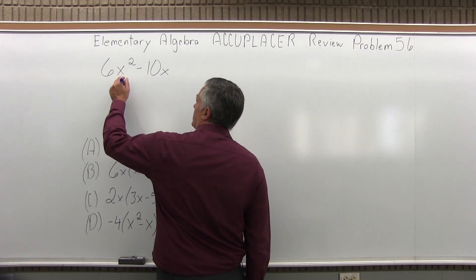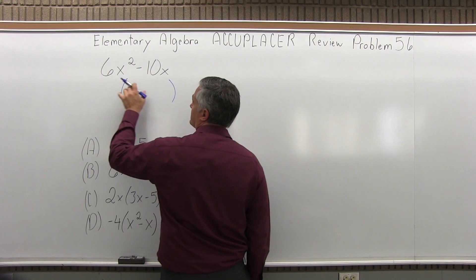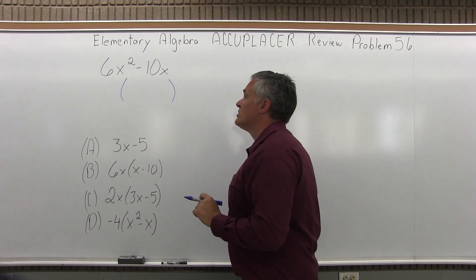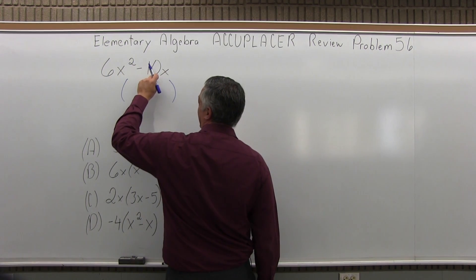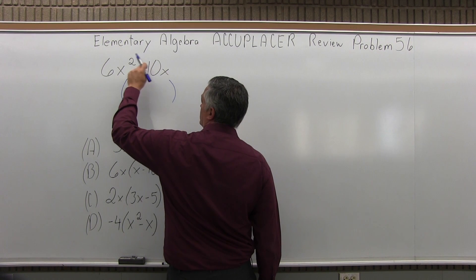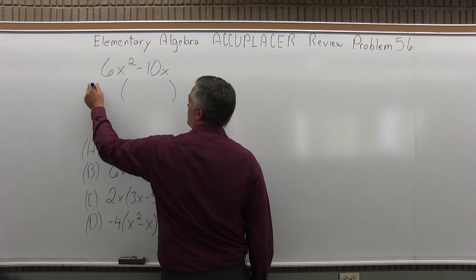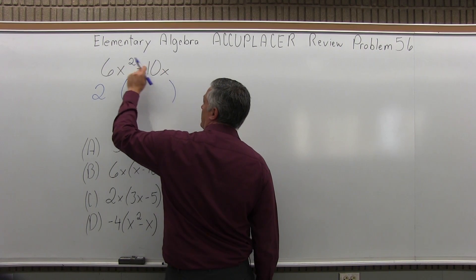So for a problem like this, what they're looking for is for us to make a set of parentheses, put something in front of the parentheses, something inside. So I want something that can be multiplied to give me 6x squared and minus 10x. Well, in terms of the numbers, each one is something times 2, and in terms of the x's, each one is something times x.